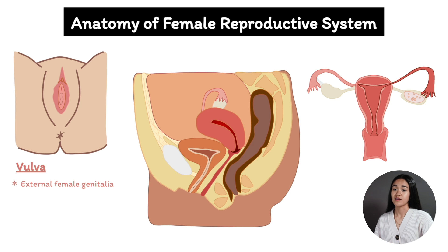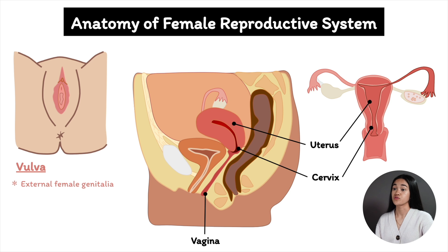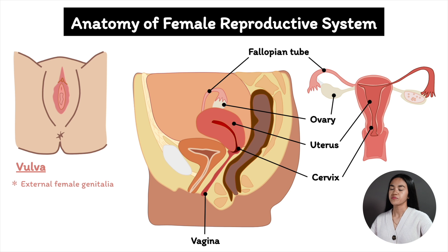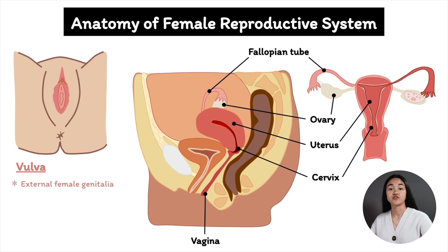The vulva refers to the external female genitalia. The organs that make up the internal genitalia include the vagina, cervix, uterus, fallopian tubes, and ovaries. In the male reproductive system, the reproductive and urinary tracts merge when the ejaculatory ducts join the urethra in the prostate. In the female, the reproductive and urinary tracts are separate from each other.